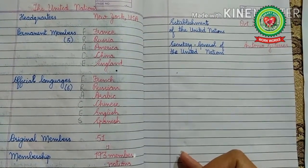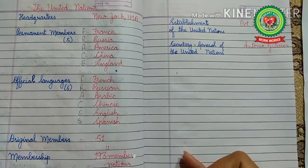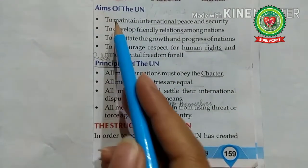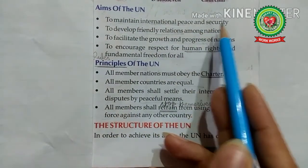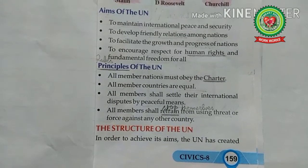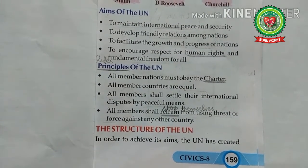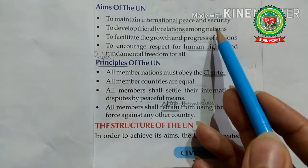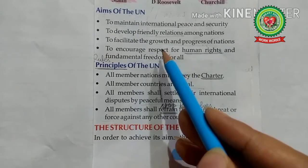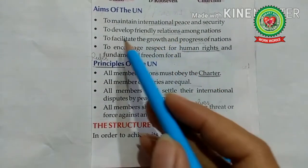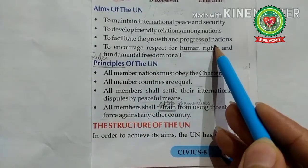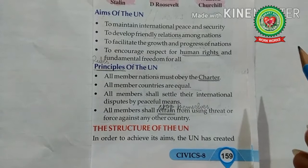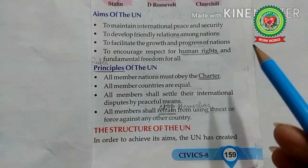Aims of the UN: First, to maintain international peace and security throughout the world — all member nations must settle international disputes in a way that does not endanger world peace. Second, to develop friendly relations among nations — countries must cooperate with one another. Third, to facilitate the growth and progress of nations — all member nations must cooperate in the areas of social, economic, and cultural needs of mankind so that nations can progress.